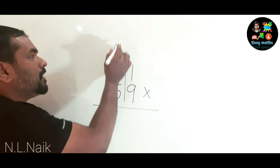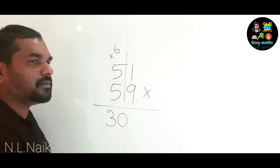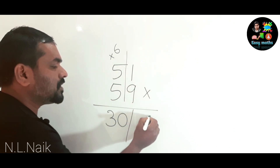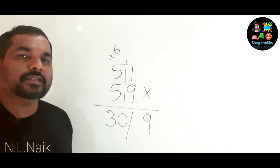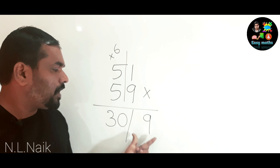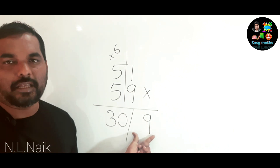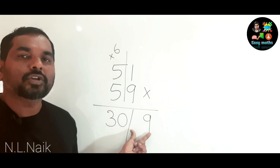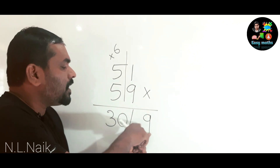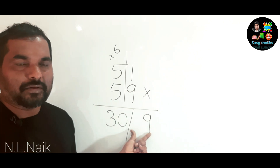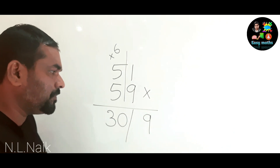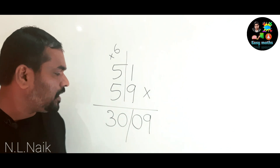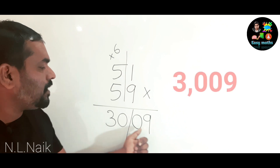The next consecutive number is 6, so 5 × 6 = 30 for the LHS. For the RHS answer, 1 × 9 = 9. Since the number of digits on the RHS is always 2, we write 09. So the answer is 3009.